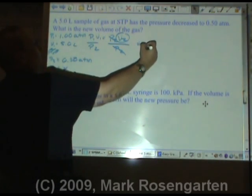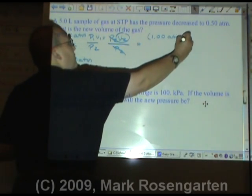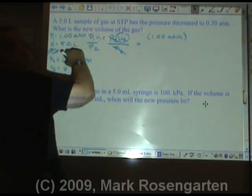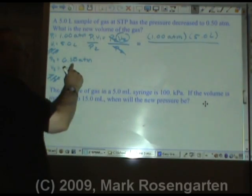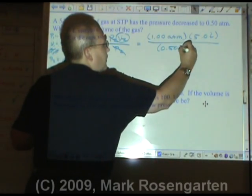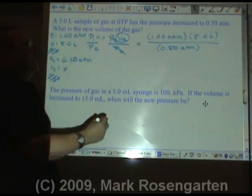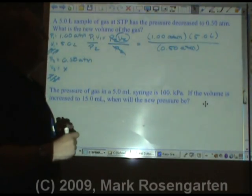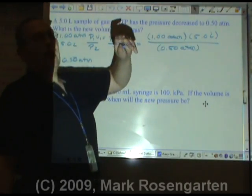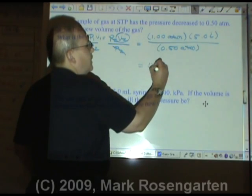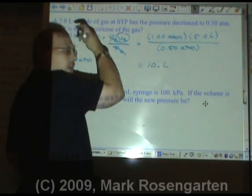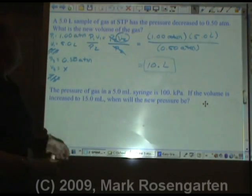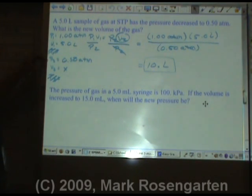So we plug it in. Our initial pressure is 1.00 atmospheres, our volume one is 5.0 liters, over our second pressure which is 0.50 atm. Atmospheres cancel and leave us with liters. So we have 1 times 5, which is 5, divided by 0.5. This equals 10.0 liters — two sig figs in our final answer. And that makes sense, because if our pressure gets cut in half, then our volume should double, because it's an indirect relationship.